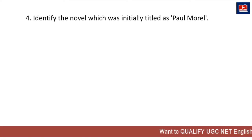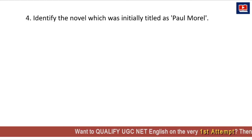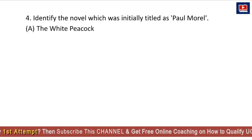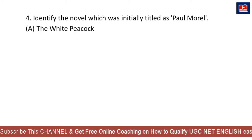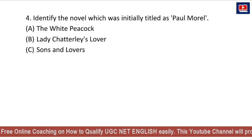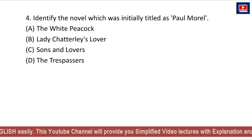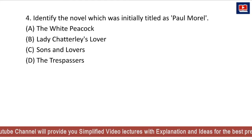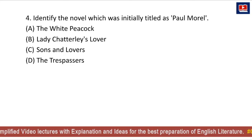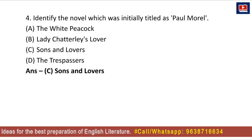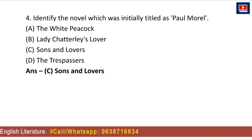The next question is: identify the novel which was initially titled Paul Morrell. The right answer is C — Sons and Lovers. Sons and Lovers had the first title Paul Morrell.